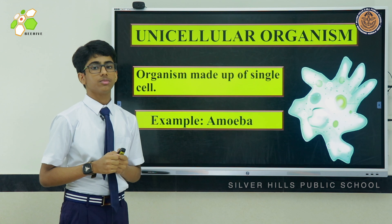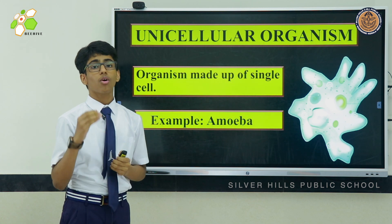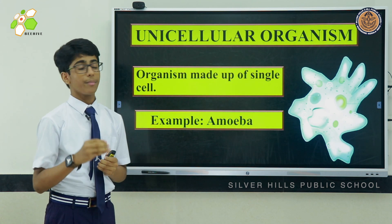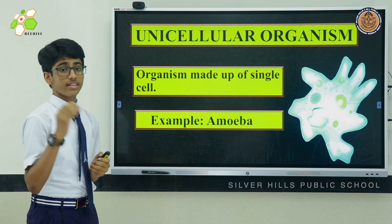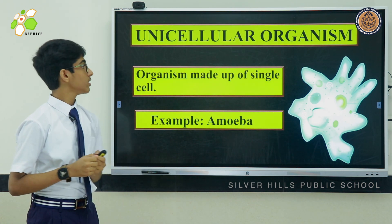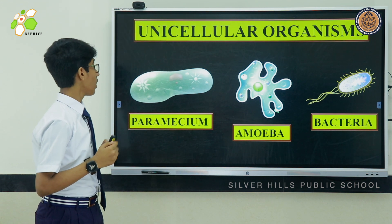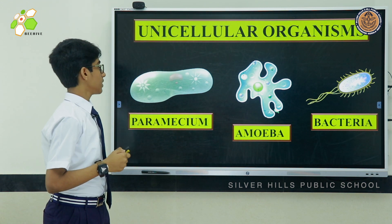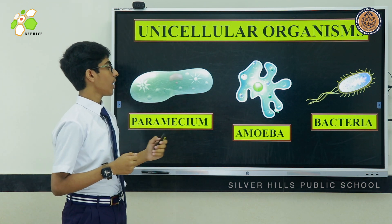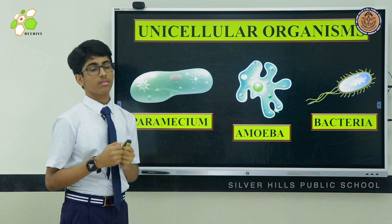Unicellular organisms are made up of a single cell. Some examples are paramecium, amoeba, and bacteria.